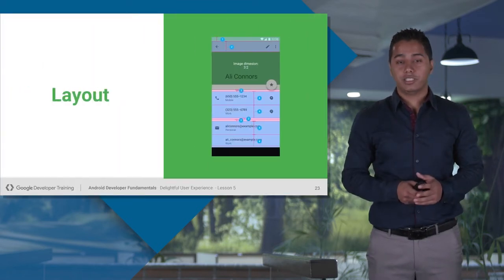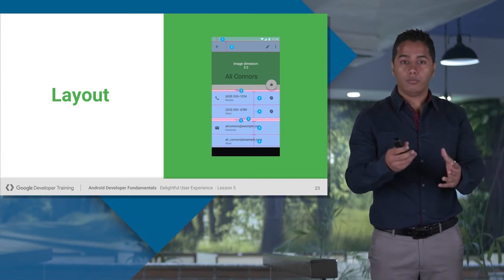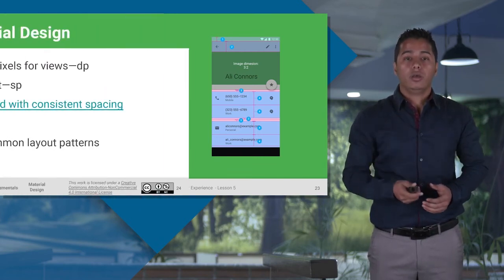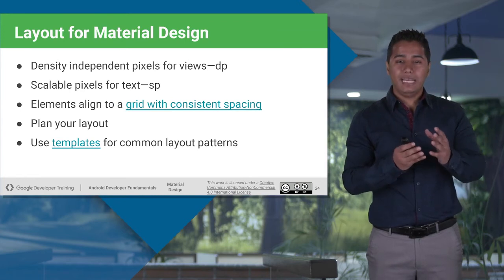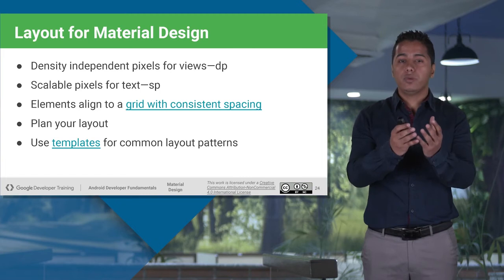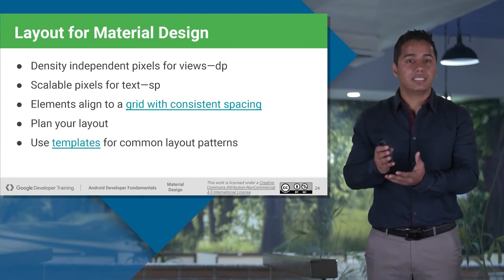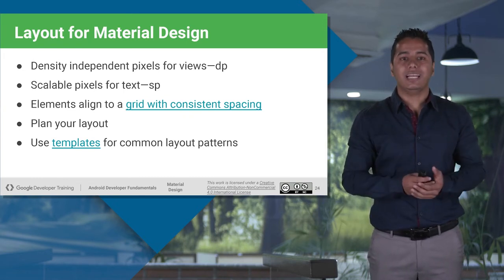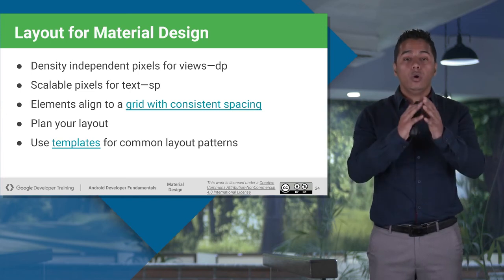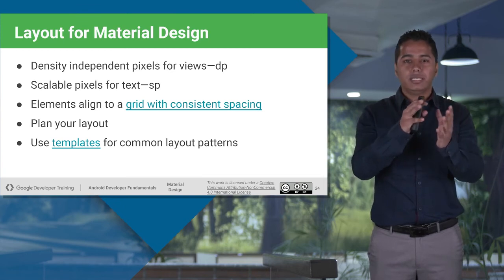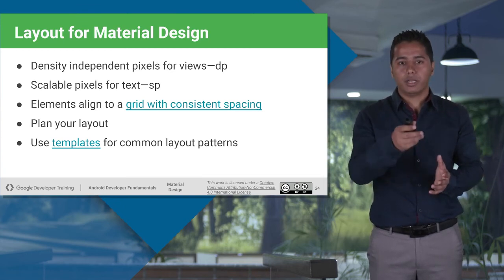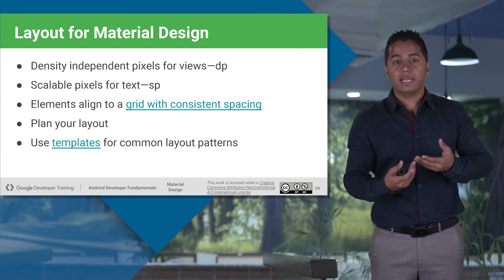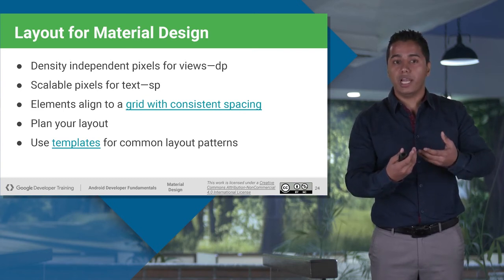Now let's just talk about layouts. It's time to implement whatever we have learned — all the components like imagery, typography, and colors — and put them together. When we are going to design any views and put them in our layout, you need to make sure that views will be sized using DP, that is density-independent pixels, and all your text font sizes will be in SP, that is scalable pixels. Anything you put on your layout should be designed with grid alignment. But before you actually design your layout, you need to plan it and make sure whatever you are designing will gel in with other views also.